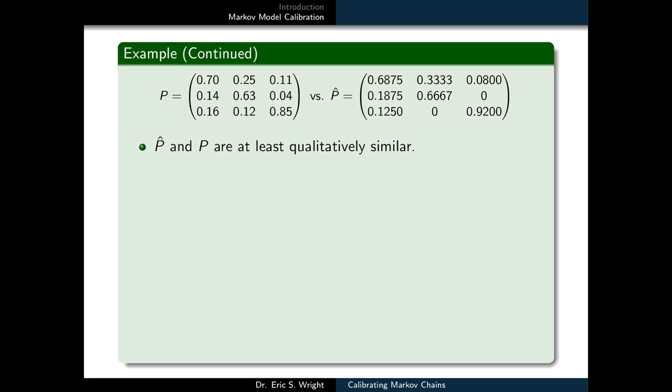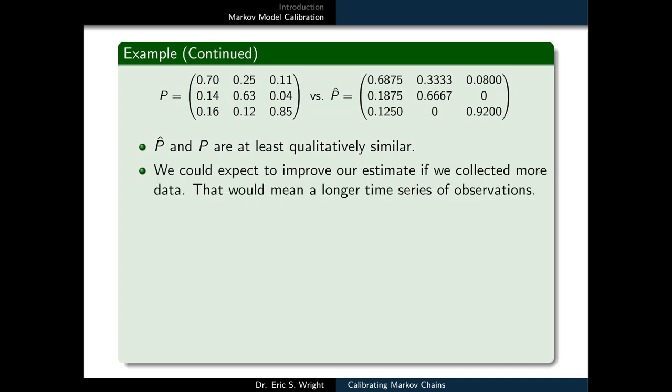We'll consider or compare the true transition probability values stored in the matrix P side by side with the estimated transition probability values stored in the matrix P hat. And we can see that P hat and P are at least qualitatively, if not somewhat quantitatively similar. But at best, we probably can only get away with stating that our estimate is rough.